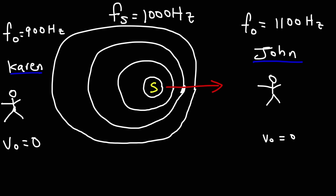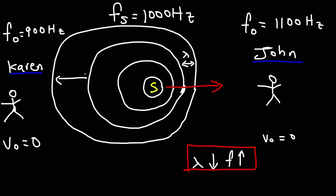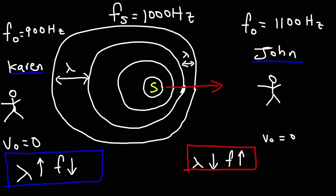Let's talk about why. As the source moves toward John, notice that the distance between the crests of the waves is decreasing, so the wavelength is decreasing. Whenever the wavelength decreases, the frequency increases. That's why the frequency increases as the source moves towards John. But as the source moves away from Karen, the distance between the waves is increasing, so as the wavelength goes up, the frequency goes down. Anytime the source moves away from a person, frequency goes down because wavelength is increasing; when the source moves towards a person, wavelength decreases and frequency goes up. That's a visual representation of how the Doppler effect works when the source is moving and the observer is stationary.